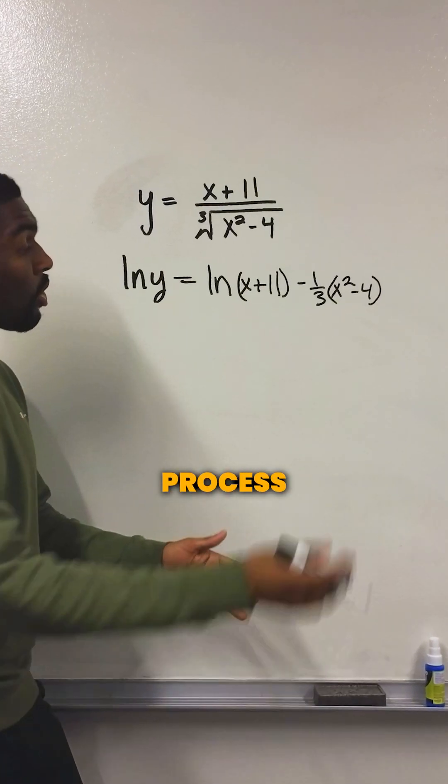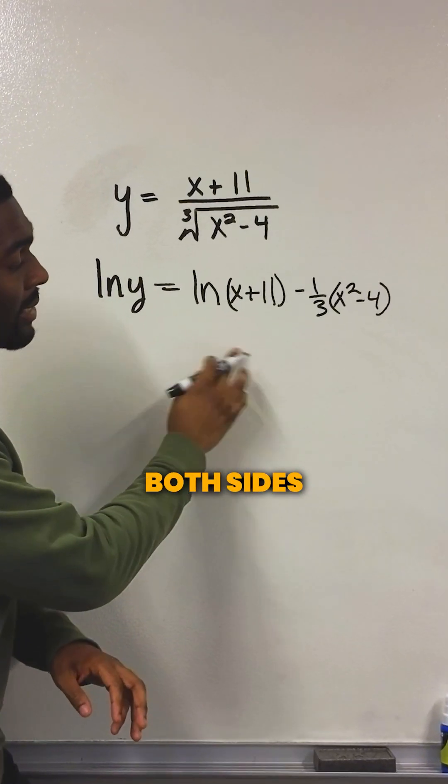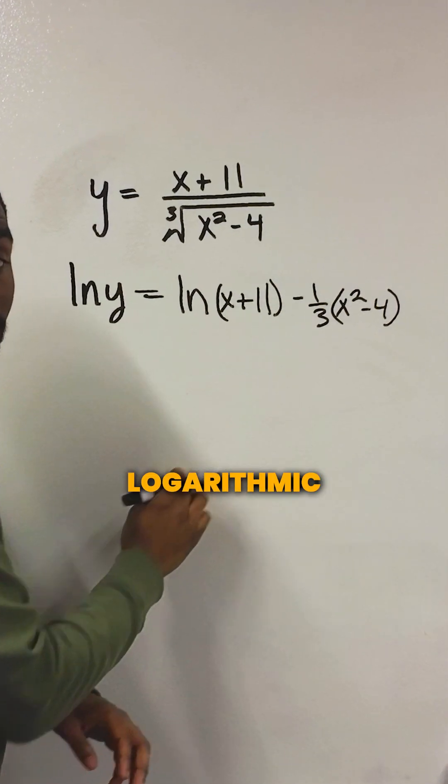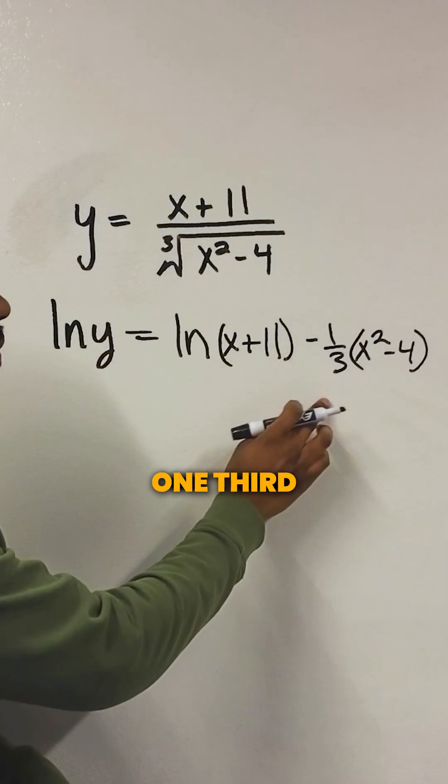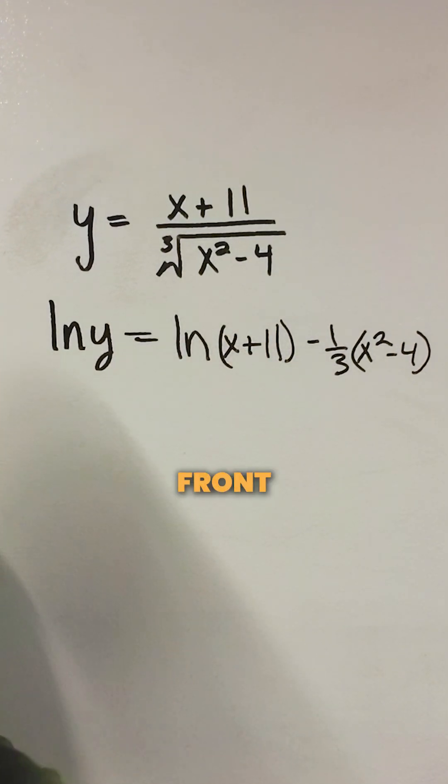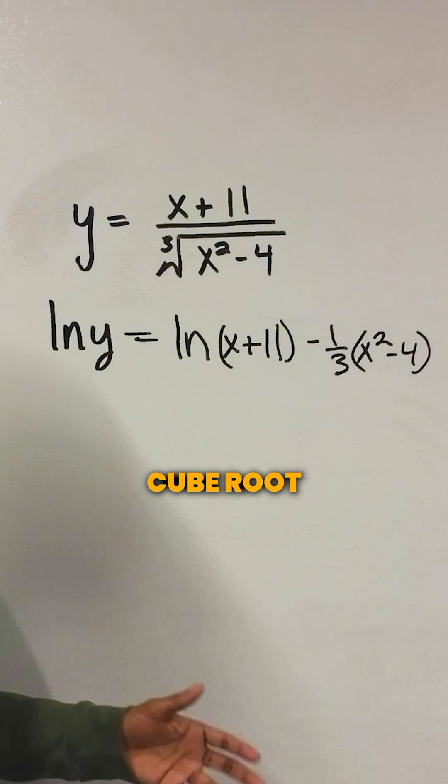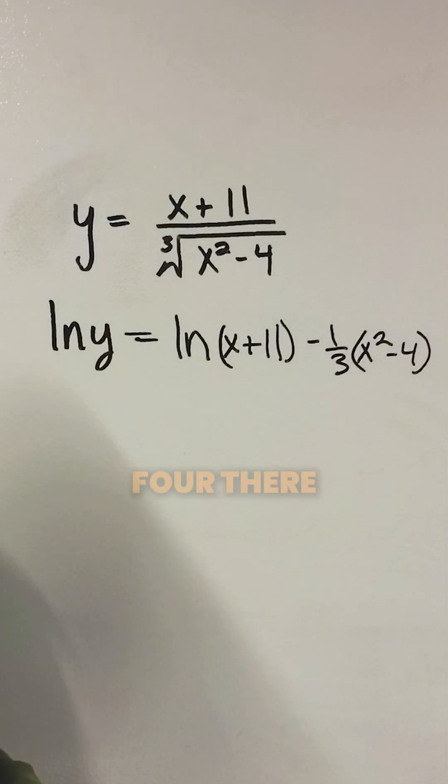So in this first process, all I did was take ln of both sides. And as you can see, I use my logarithmic properties here. So I got ln of X plus 11 minus one third. The one third comes out of the front from my cube root and I have X squared minus 4.